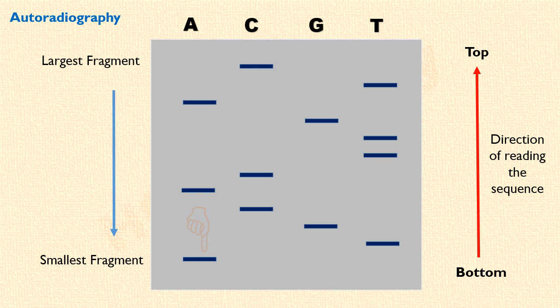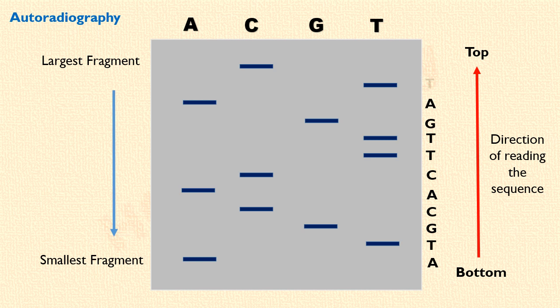The second shortest fragment is in the T-lane. Then in the G-lane. Then in the C-lane. And so on. Thus the sequence we read in this autoradiograph from bottom to top is: A, T, G, C, A, C, T, T, G, A, T, C. The direction is 5' to 3', from bottom to top.